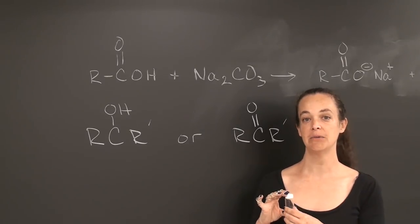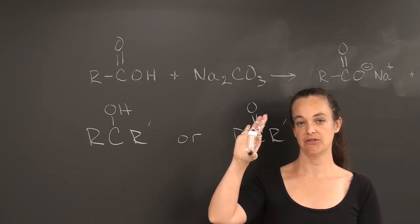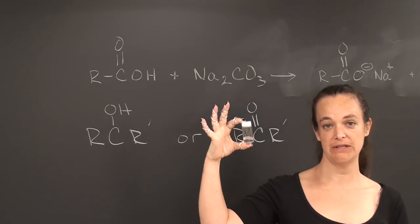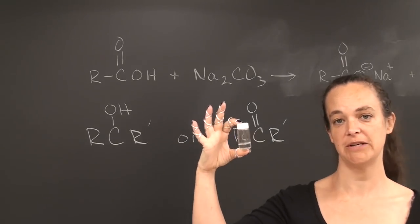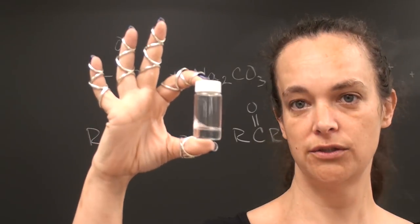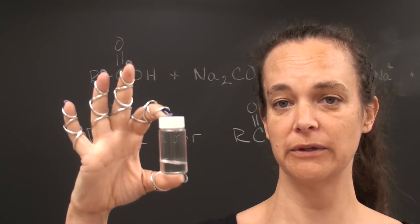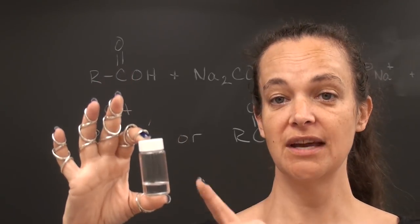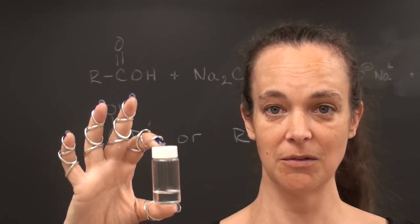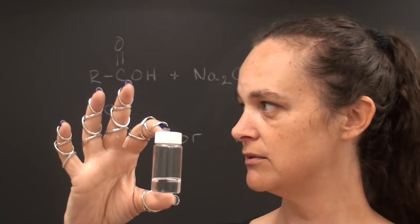For the next four weeks in lab, you are going to be working with a mixture of two compounds in this vial. Each one of you is going to be given one of these vials. It has two different compounds in it, and the entire point of this four-week experiment is for you to separate the two compounds, characterize them, and figure out the identity of each compound.